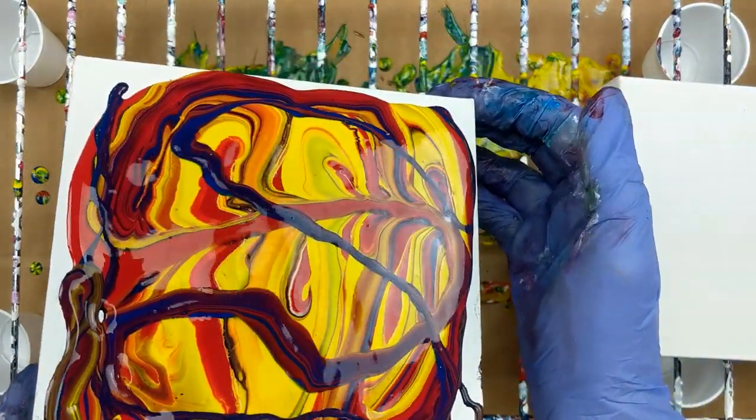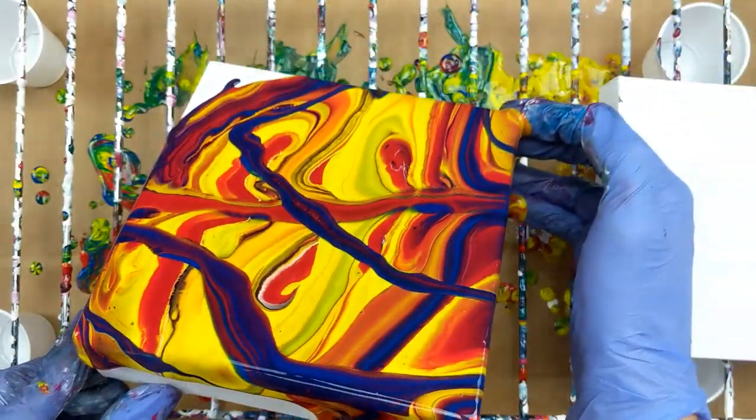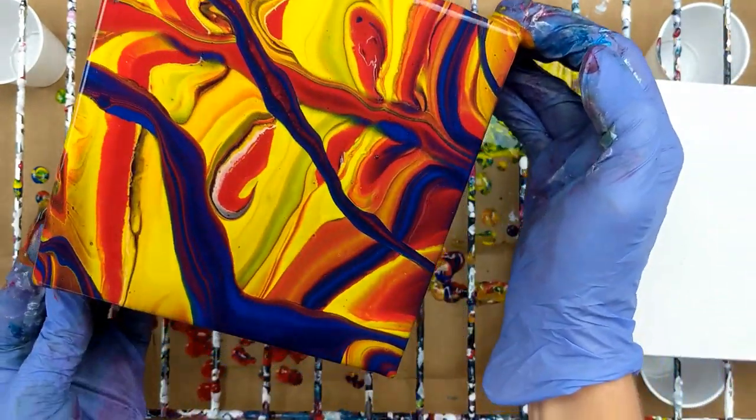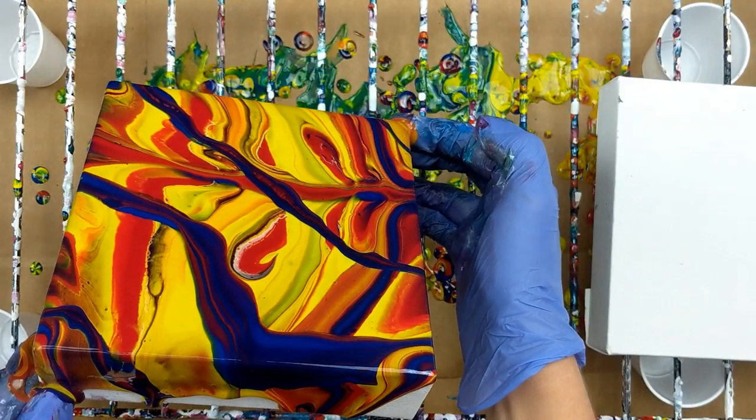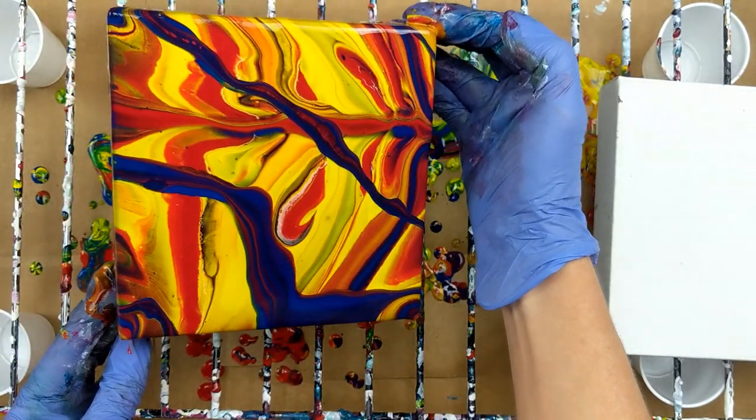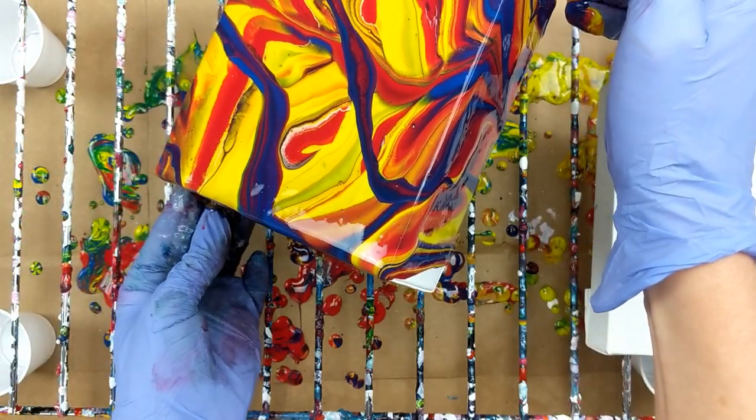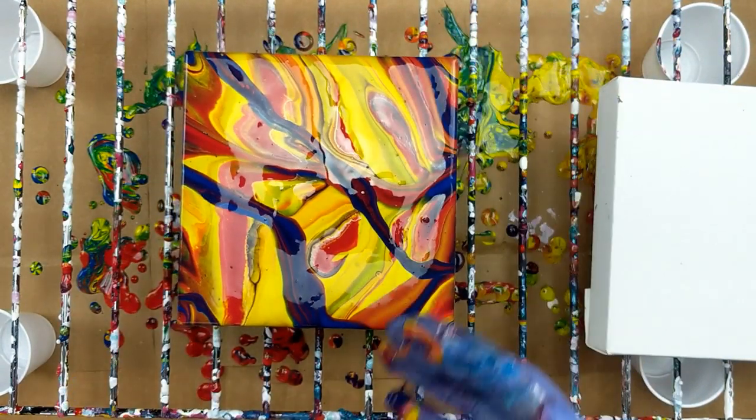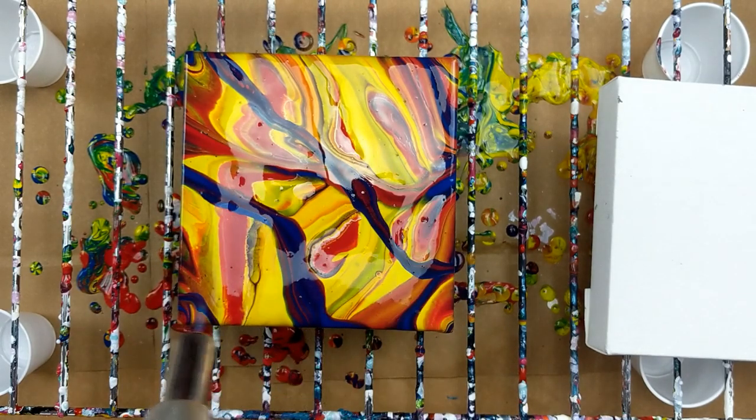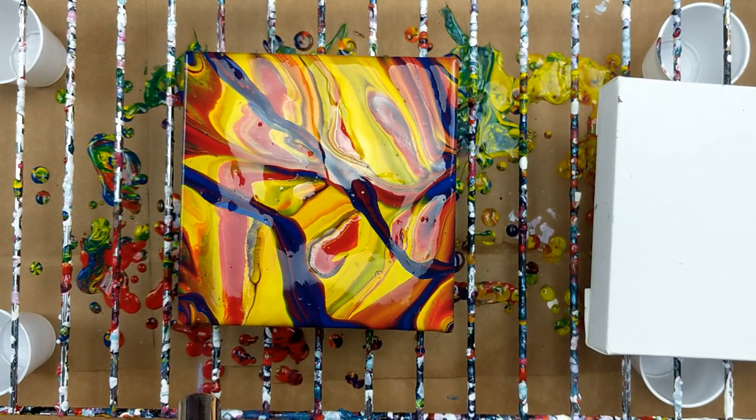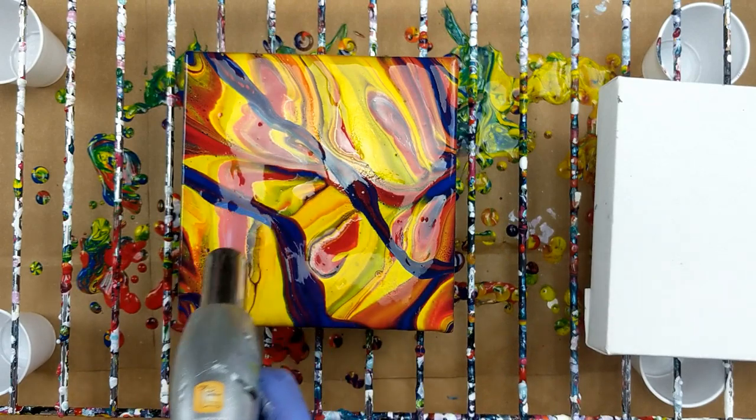I'm just going to start pouring. Now I'm going to just start moving it. Alright, and I'm going to go back over it with my torch, pop those bubbles, and then I'm going to see if we can get some cells. A bunch of little ones.